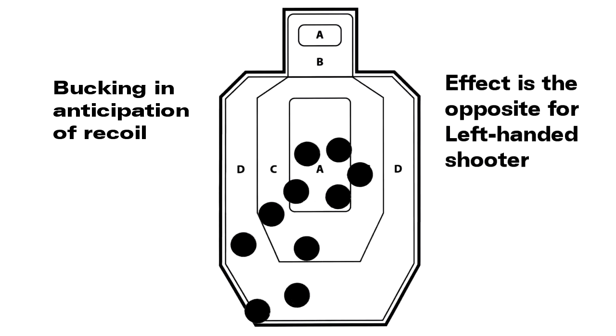Sample target number six. Probable causes: number one, bucking, which is a slight push with the right shoulder on the butt in anticipation of recoil. It will move the sights and the shot. The effect is opposite for the left-handed shooter.